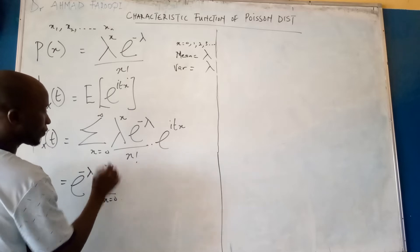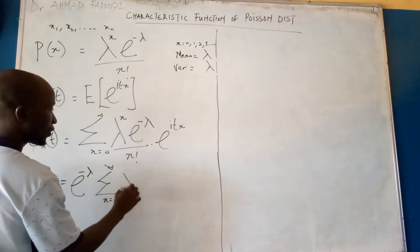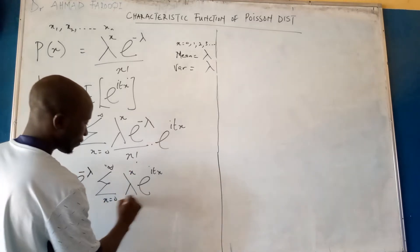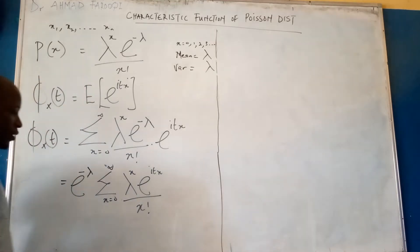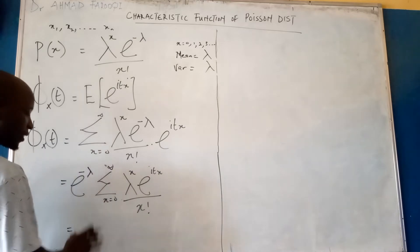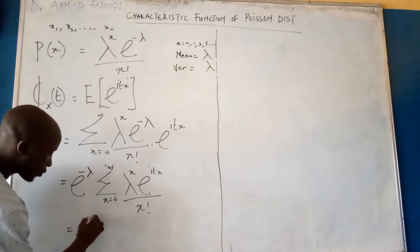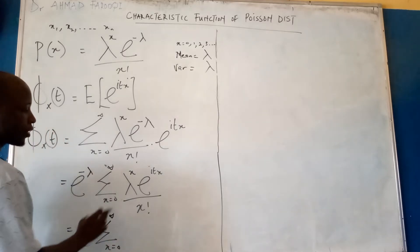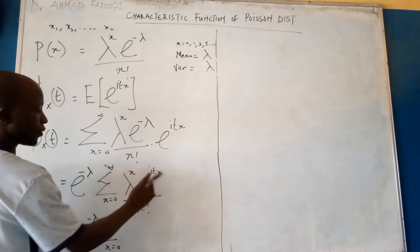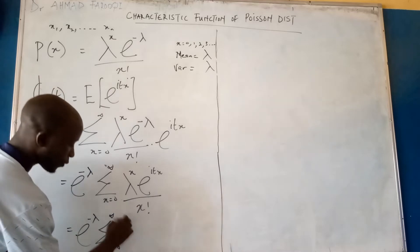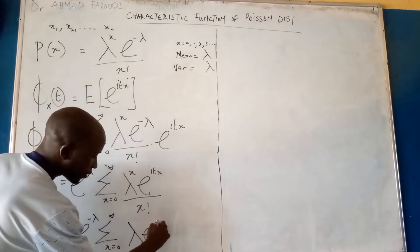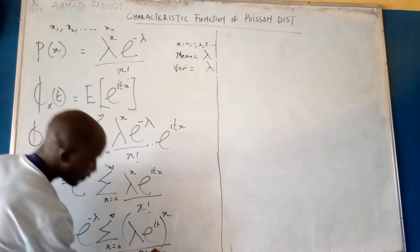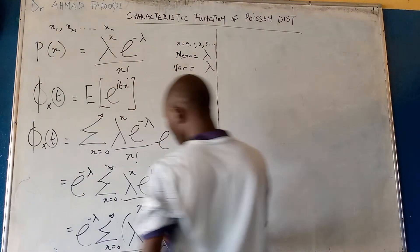This gives us exponential minus lambda times the summation from x equals zero to positive infinity. We join the x-dependent terms together to get lambda exponential i t, all to the power x, divided by x factorial.